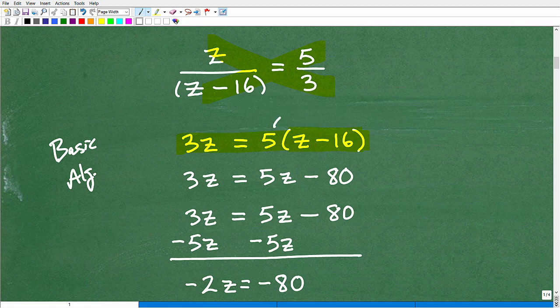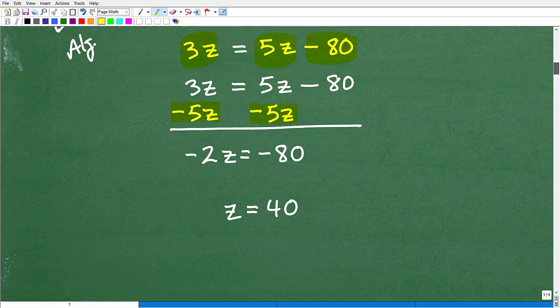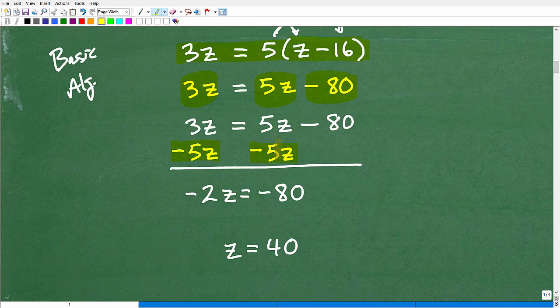So let's go ahead and do this. So it's going to be 5 times z. We're going to use the distributive property here. So that's 5z. 5 times 16. That's 80. So let's just kind of walk through the problem. So 3z is equal to 5z minus 80.